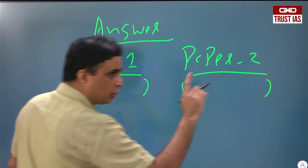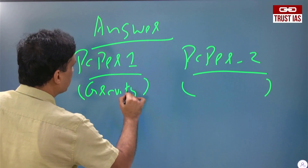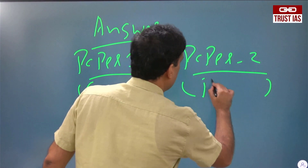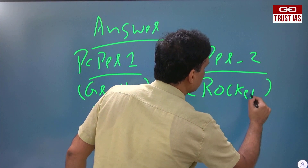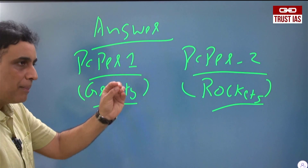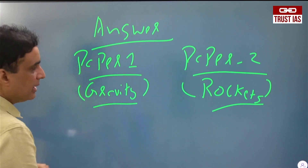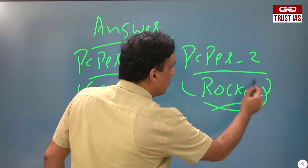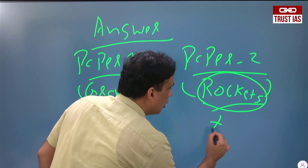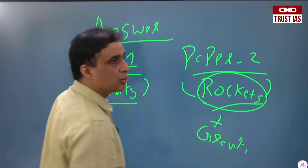Understand this point: I am teaching you gravity — what gravity is — and here I am teaching you rockets, how rockets work and why, how they are launched. Apply your common sense, apply logic. When you write something about rockets, can you avoid not talking about gravity?